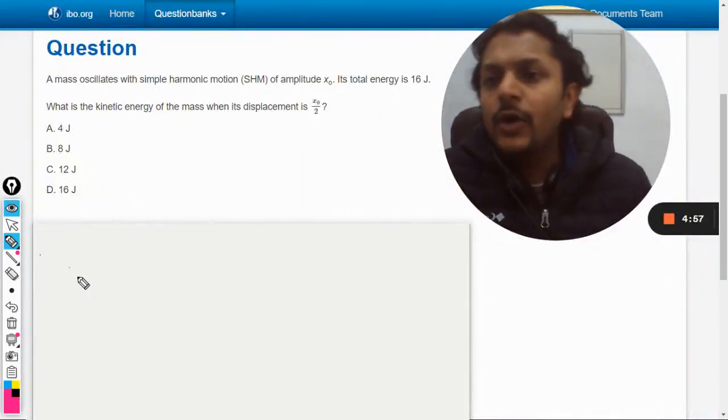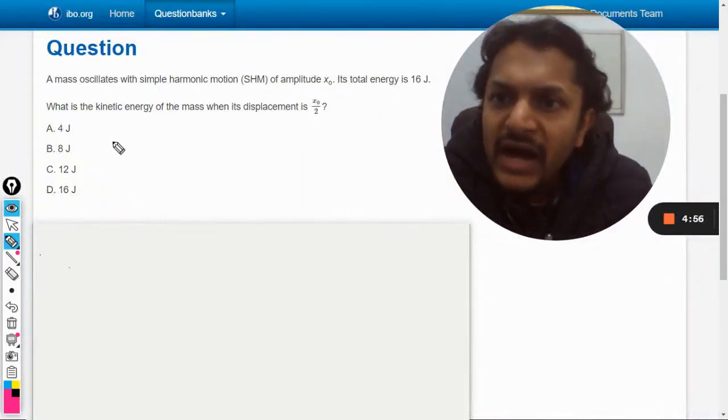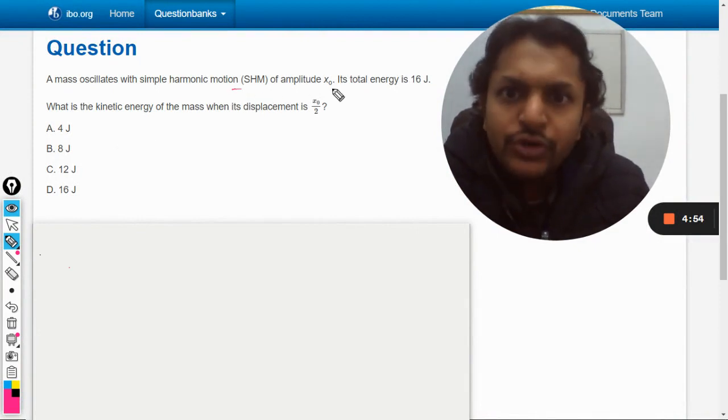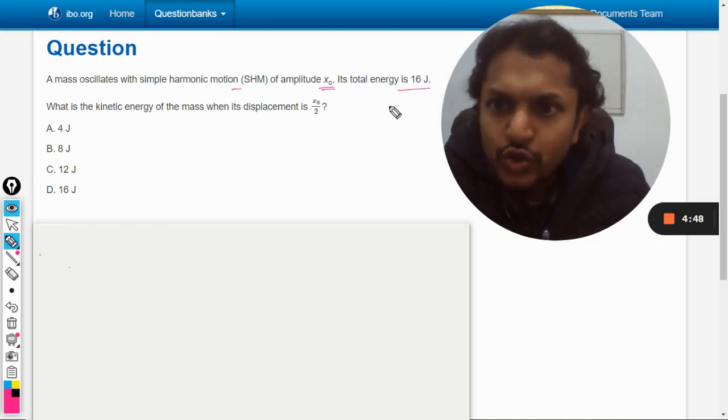Okay dear students, let us see how we are going to solve this question. A mass oscillates with simple harmonic motion of amplitude x_naught. Its total energy is given by 16 joules. What is the kinetic energy of the mass when the displacement is x_naught by 2?